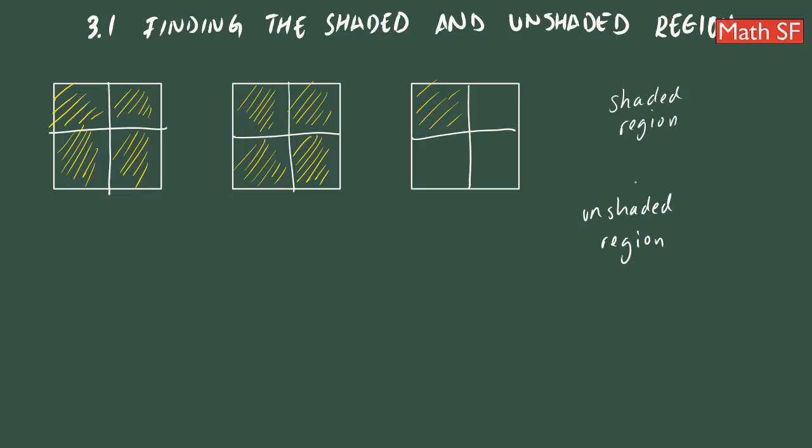Recall that one whole square is interpreted as one whole. This is another whole. This is another whole unit.